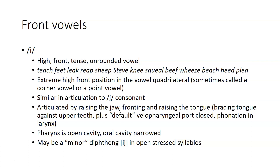In this articulatory configuration, the pharynx is a relatively open cavity because the tongue has been pulled forward and raised, whereas there's a fairly tight constriction in the oral cavity. In some speakers, in stressed syllables, there may be some change in the articulatory position of this vowel from the E position to something more similar to the Y consonant, making it a non-contrastive or minor diphthong.